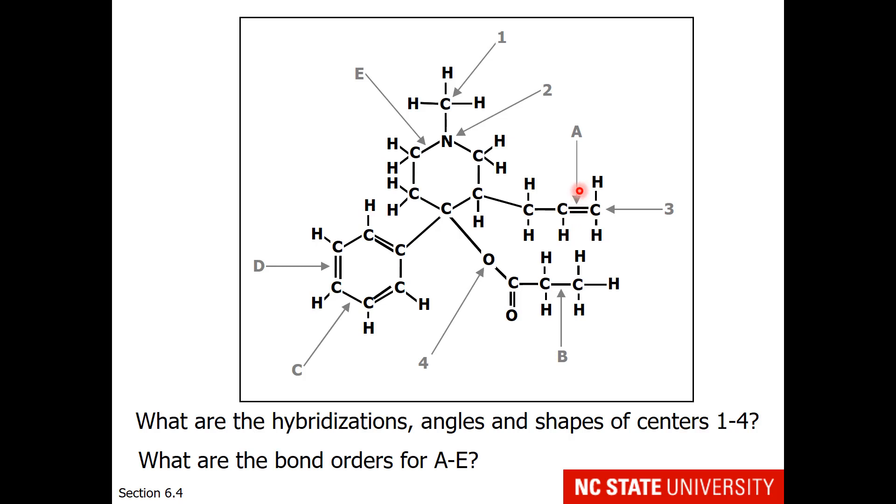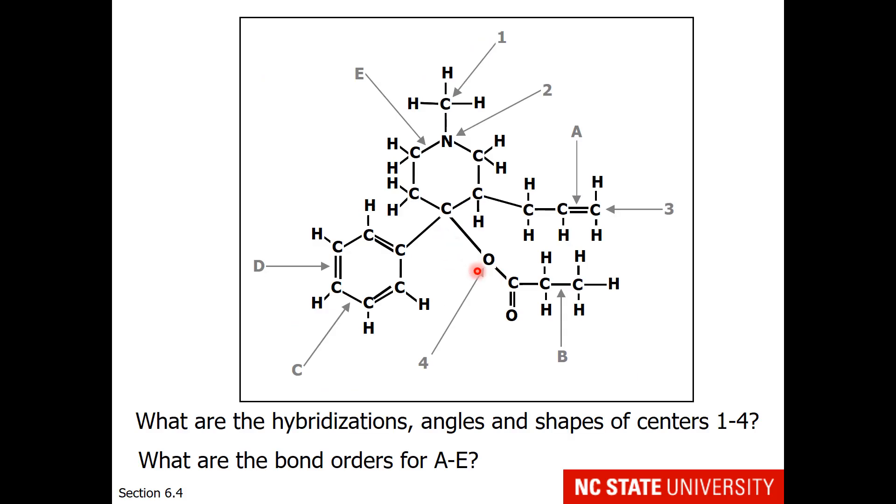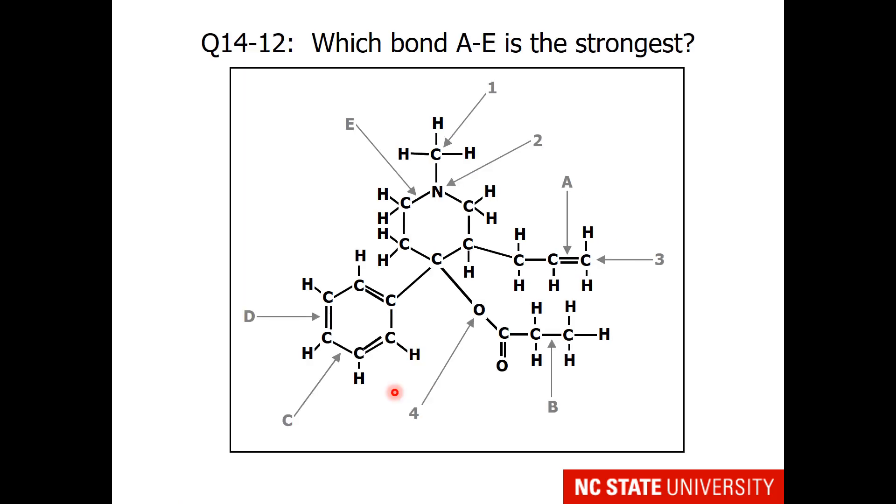The last question concerns element 4. This is the oxygen with two single bonds. But just like the nitrogen, I hope you'll look at that oxygen and decide that perhaps it needs a lone pair or two.